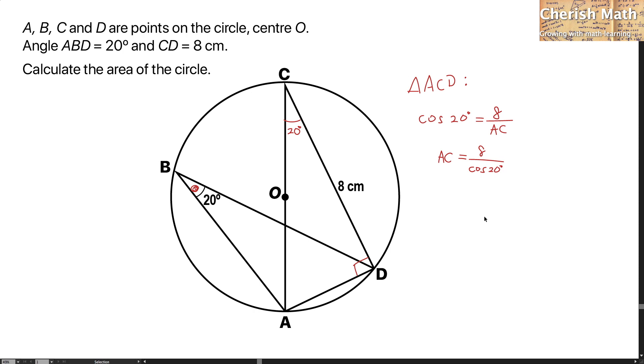For the area of circle, the formula I denote with A, it comes with pi R squared, where R is the radius of the circle. Now, the radius here is exactly one half of the diameter, and the diameter that we got here is AC, which is equal to 8 over cos 20 degrees.